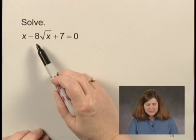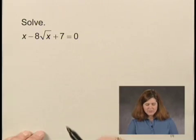We're going to solve an equation now that has a square root term in it. That equation is x minus 8 times the square root of x plus 7 equals 0.